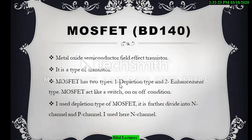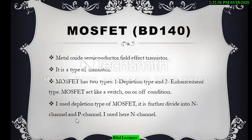MOSFET has two types: depletion type and enhancement type. I used the depletion type in this project. MOSFET acts like a switch — it has an on condition or off condition for a device. The depletion type is further divided into N-channel and P-channel. I used the N-channel type here.